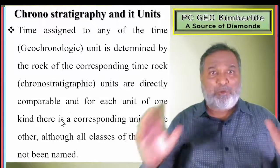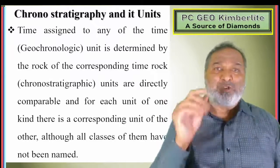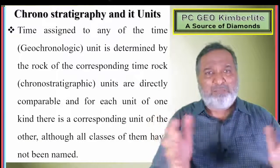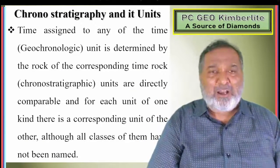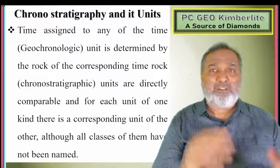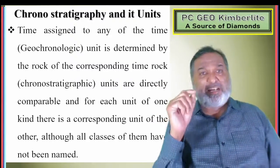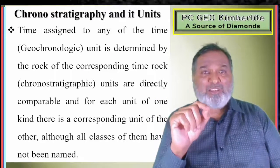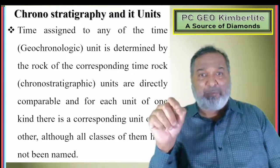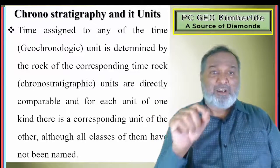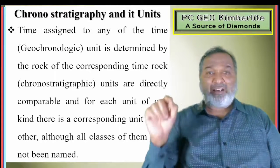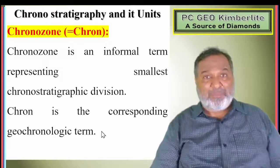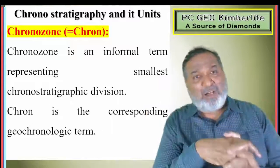The IUGS monitors all chronostratigraphic units. Whatever stratigraphic units exist have been defined by these bodies. The time assigned to any geochronological unit is determined by the rock of the corresponding chronostratigraphic unit — both are directly comparable and for each unit, there is a corresponding unit of the other, though not all classes have been named.